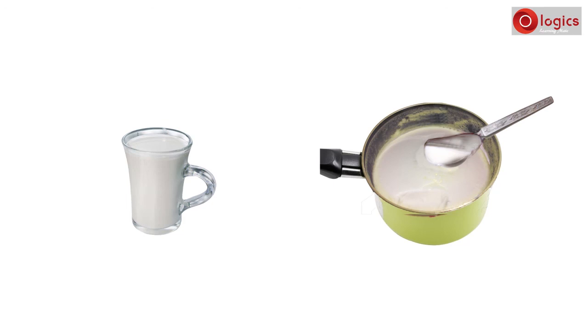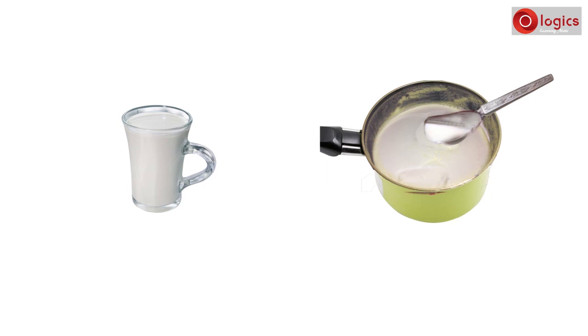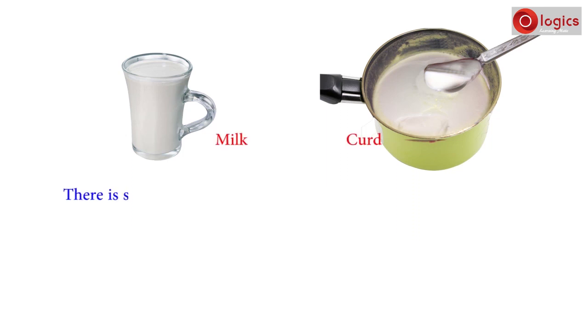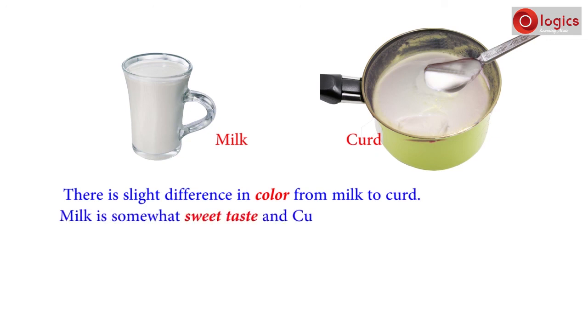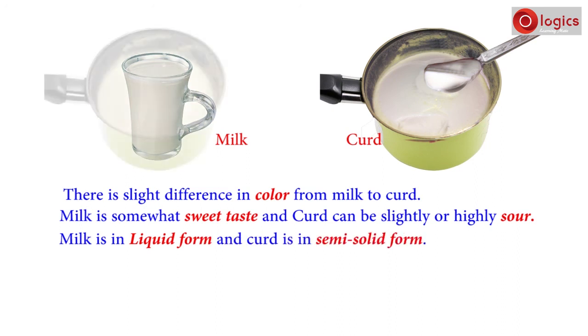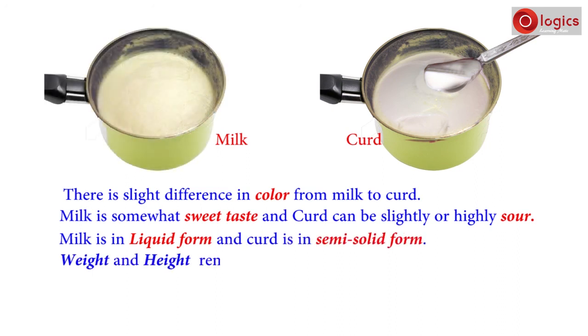What changes do you see when milk is converted into curd? You may notice that there is a slight difference in color from milk to curd. Milk is somewhat sweet in taste and curd can be slightly or highly sour in taste. Milk is in liquid form and curd is in semi-solid form. Weight and height remain the same after milk is converted to curd.